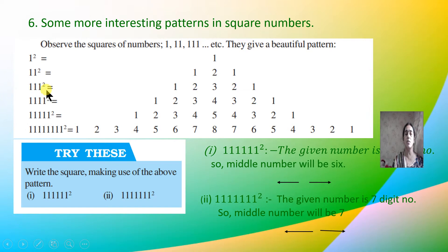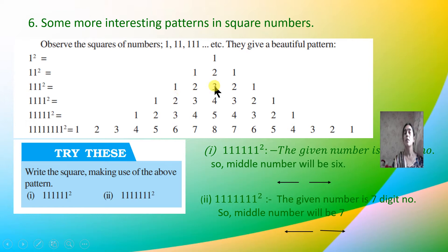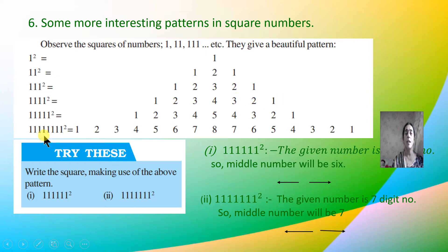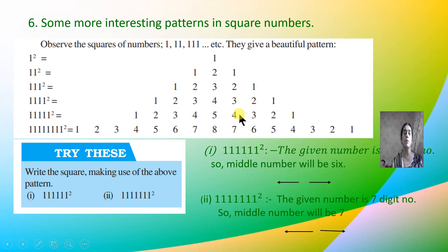For 1111 squared, there are four 1s, so we go 1, 2, 3, 4 and reverse: 4, 3, 2, 1 — giving 1234321. For 11111 squared, five 1s, go 1, 2, 3, 4, 5 and reverse to get 123454321. For 11111111 squared (eight 1s), we go 1, 2, 3, 4, 5, 6, 7, 8 then reverse: giving 12345678987654321.